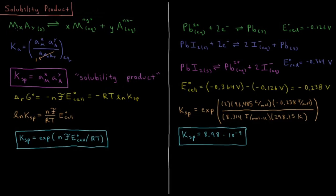So for a given sparingly soluble salt, its solubility product is going to be the activity of the metal to the power of the number of atoms in the salt times the activity of the counter anion to the power of the number of it in the salt.